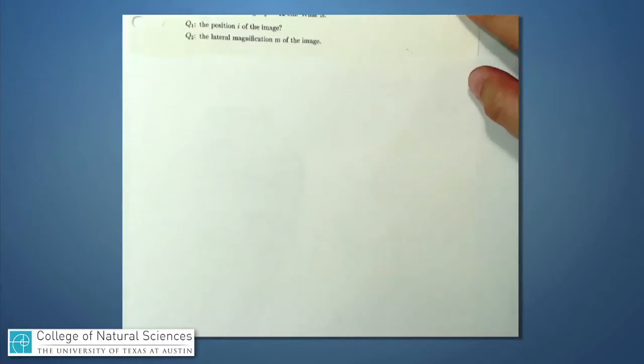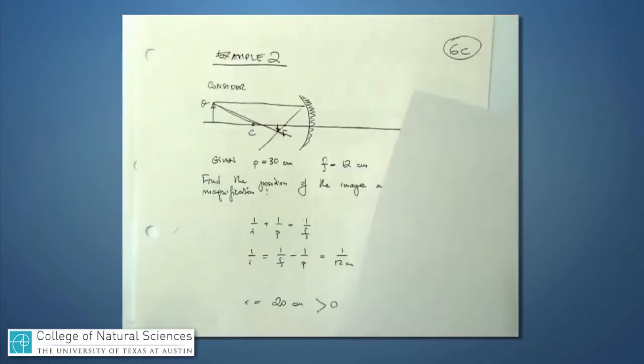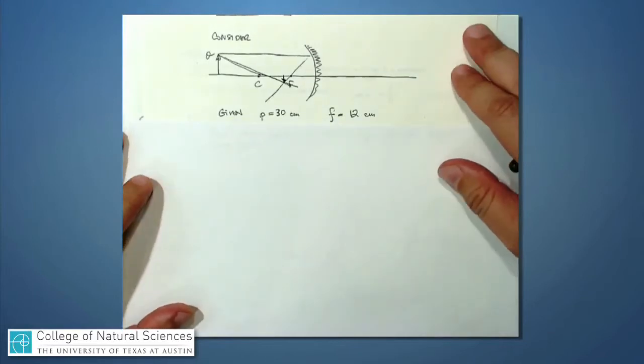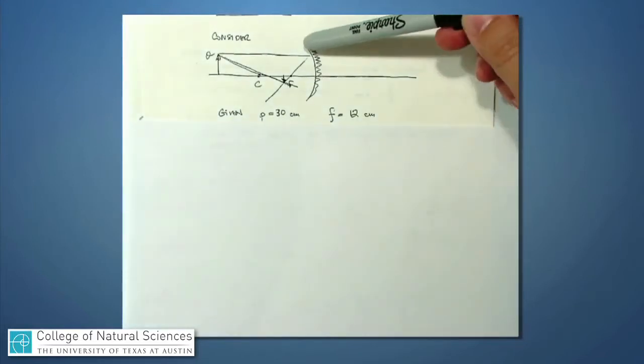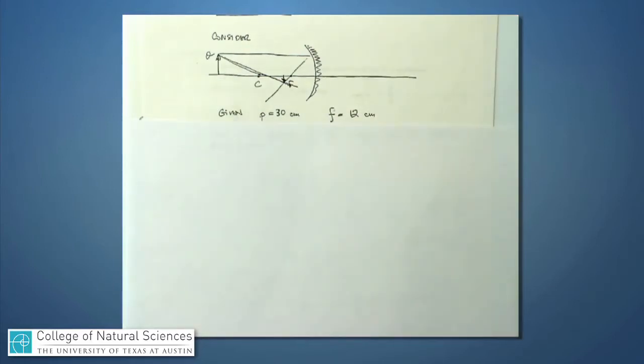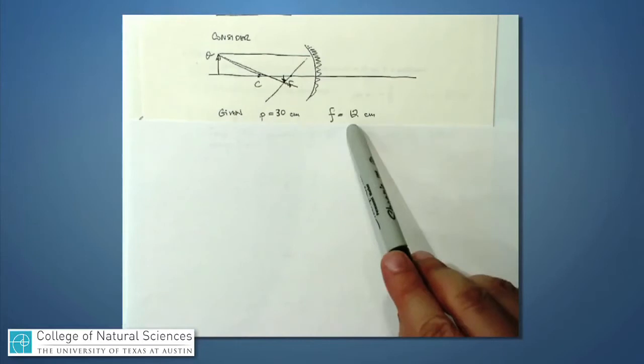Remember, we're going to continue to use our same expression for how we calculate these things. I've drawn a little picture here just to get us started. This says it's a concave mirror, so it's pushed in like that. Our object is out in front by 30 centimeters. In the problem, we're given that the focal length is 12 centimeters, and this actually has the correct sign on it, sign meaning positive or negative.